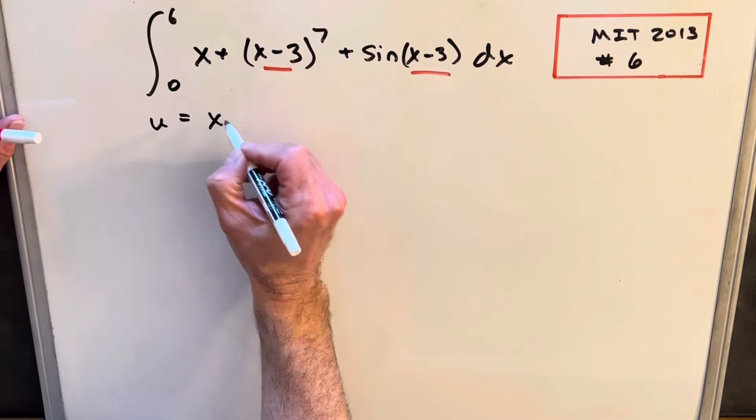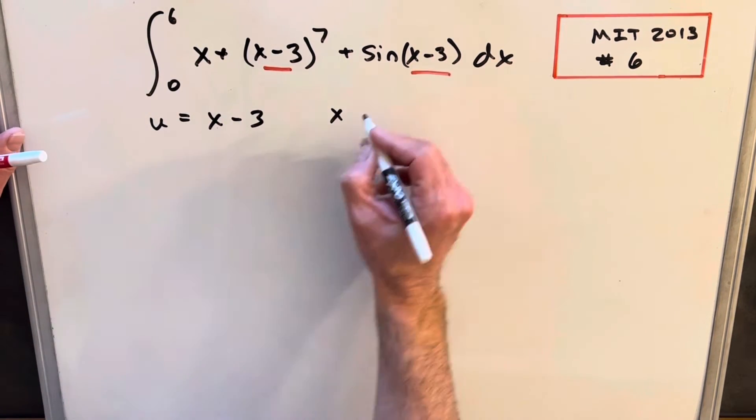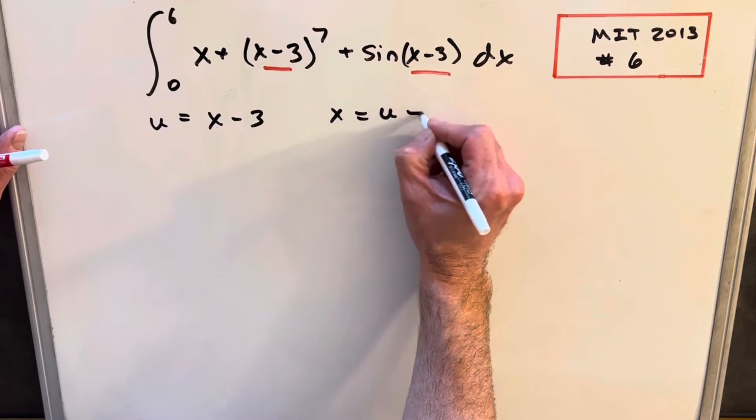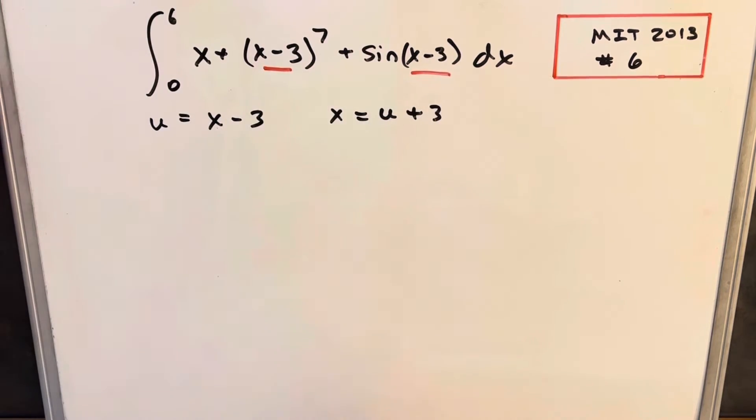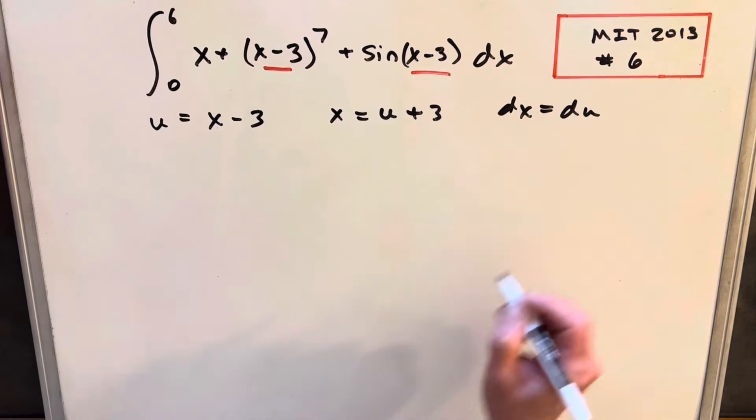So I'm going to make my u equal to x minus 3. Since we have x right here, let's find our x value. So just adding a 3 on both sides, we're going to have x equals u plus 3. And then we can see taking the derivative, that means dx is going to be the same thing as du.